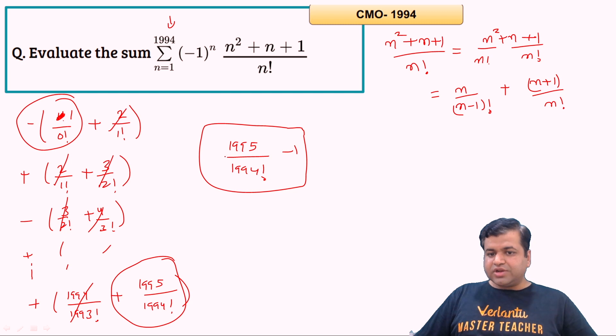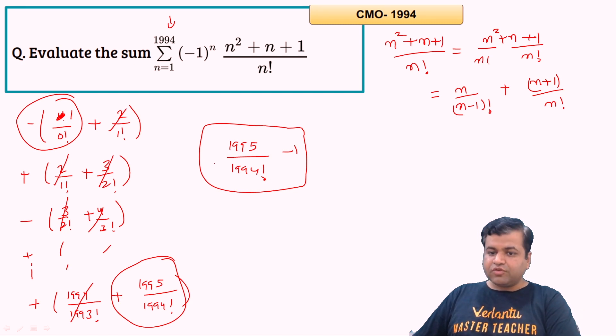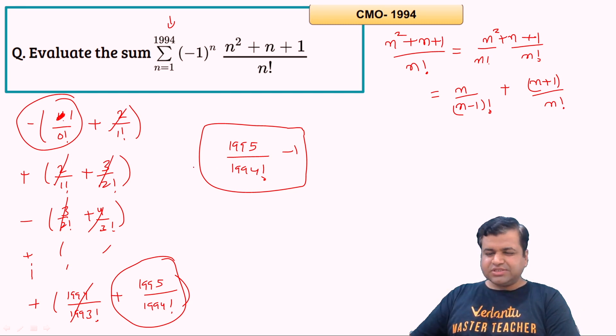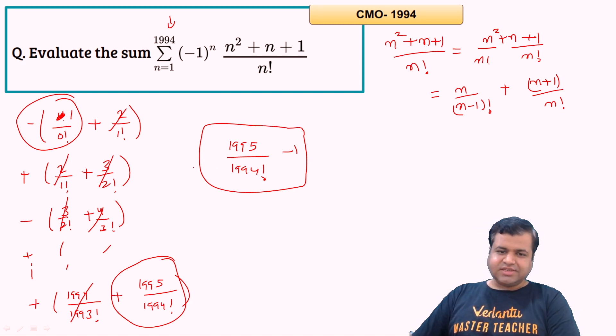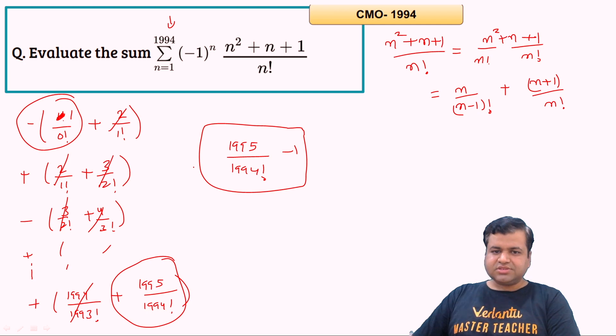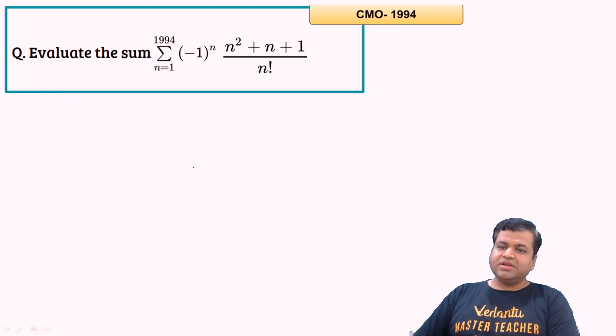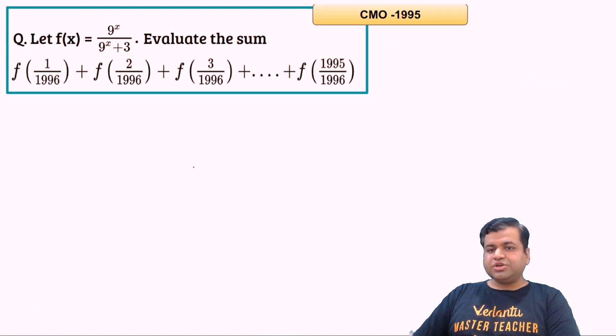So the final answer is 1995/1994! − 1. That was an easy question — just a basic application of the telescoping sum technique. Let us proceed to the next question.